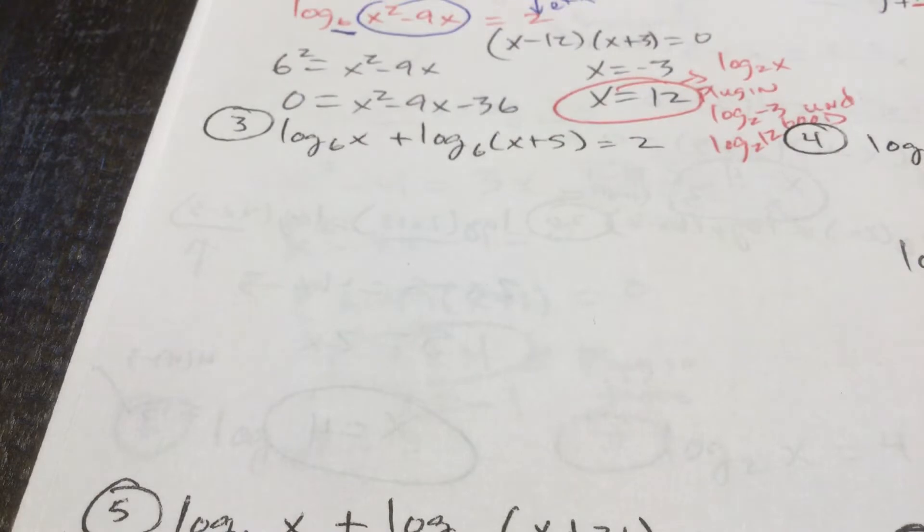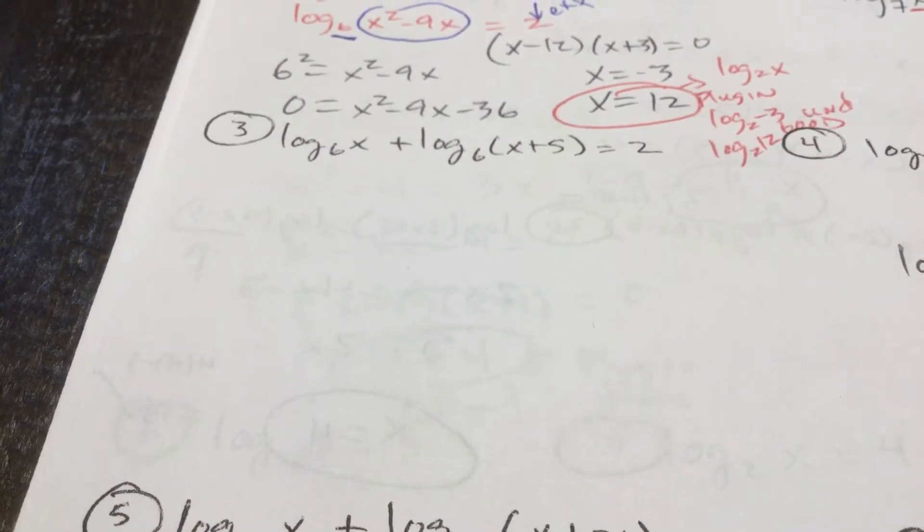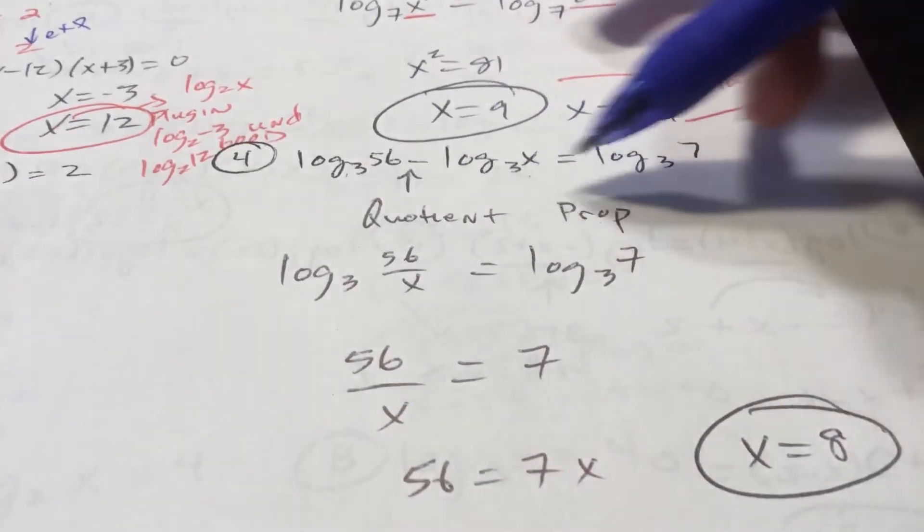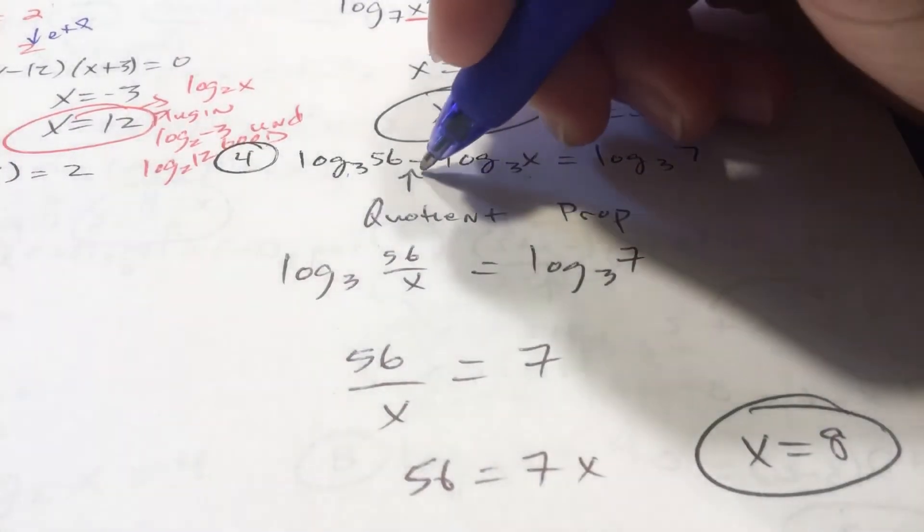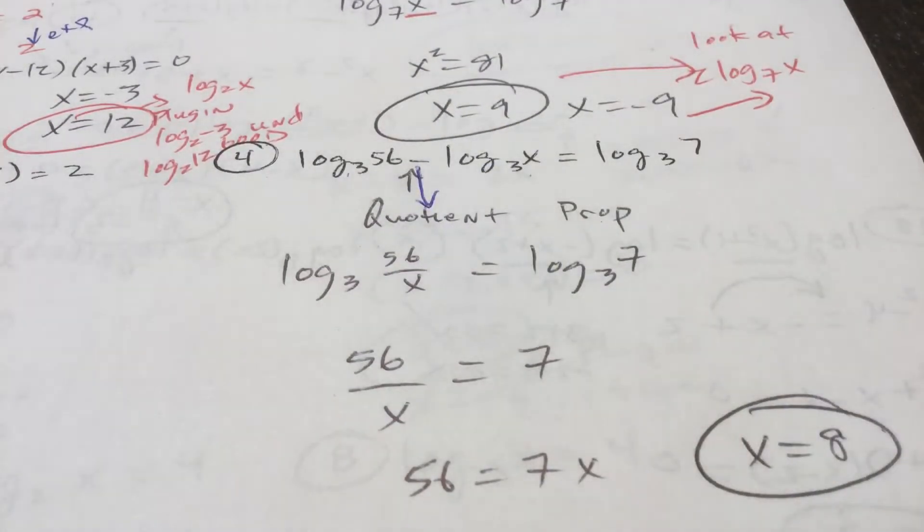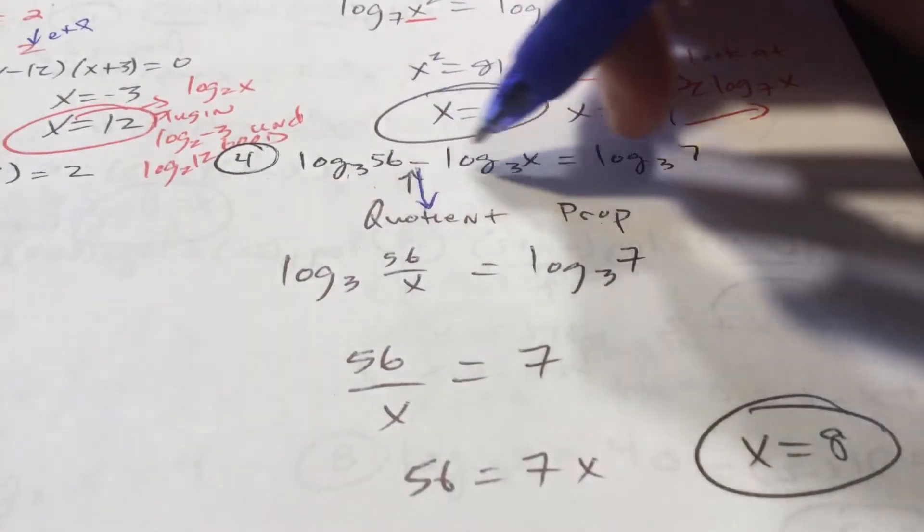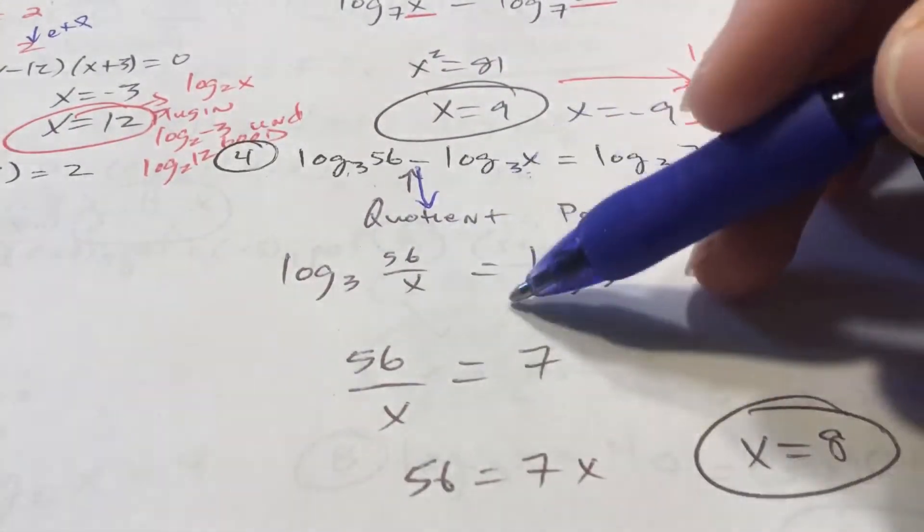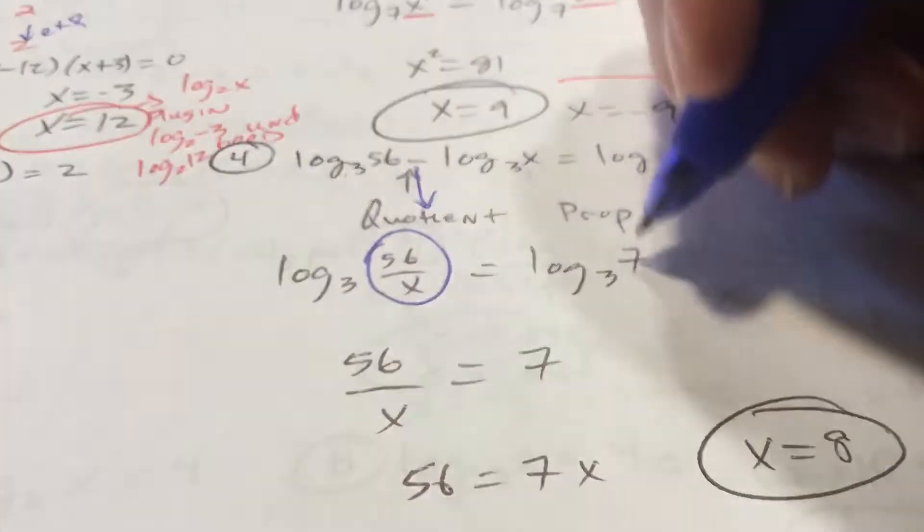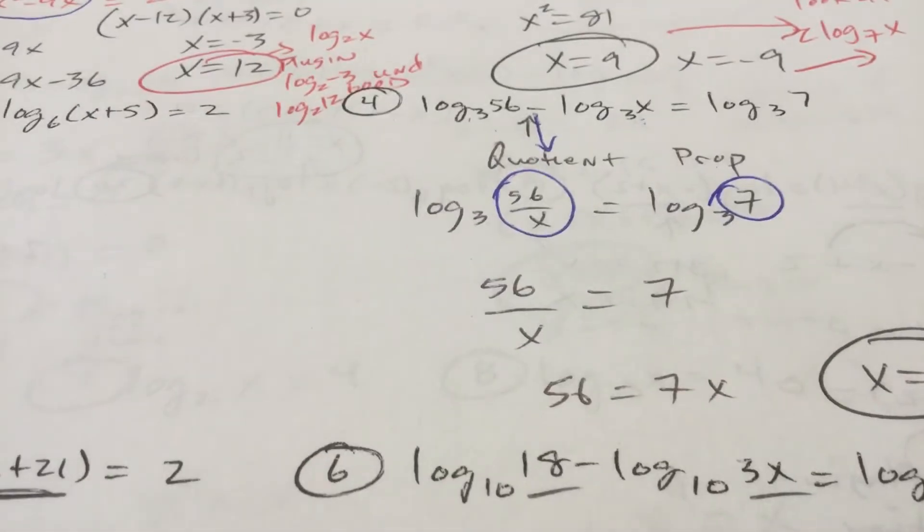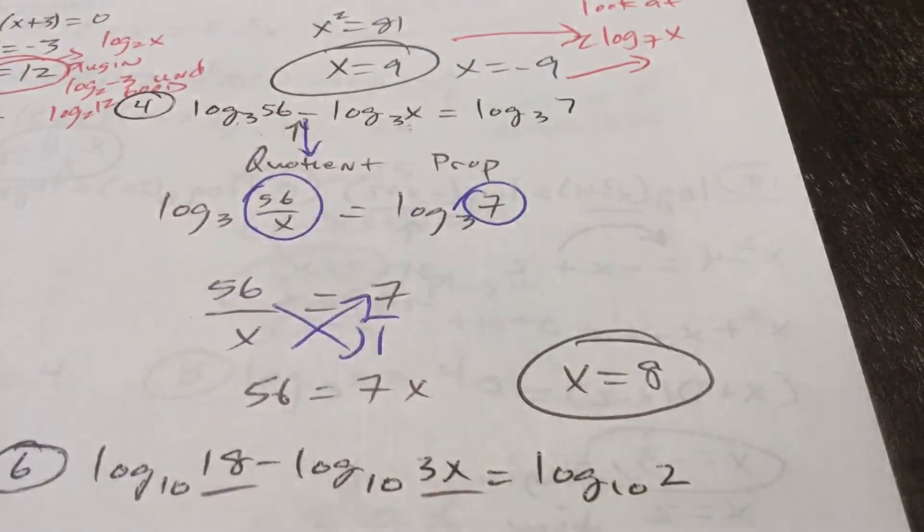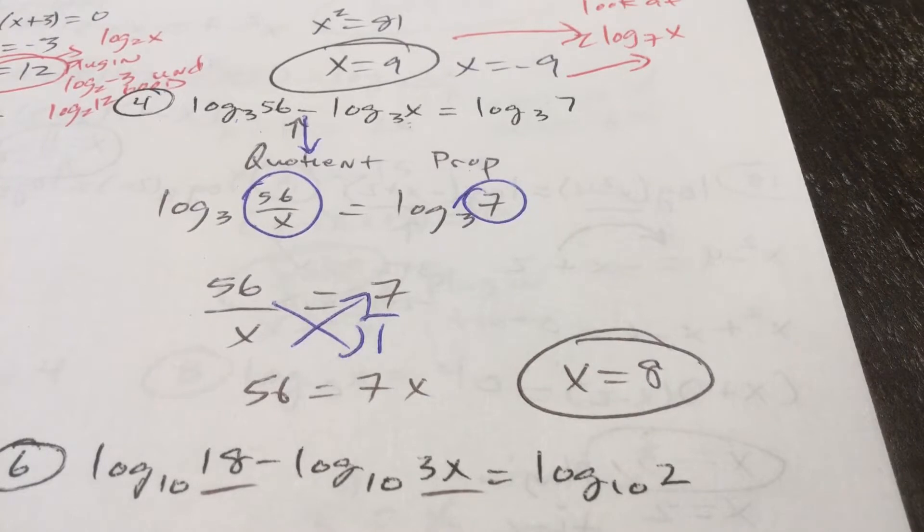All right. Number 3 is almost identical to number 1. You guys can do that. Literally almost identical. I will do 4 with you. Log base 3. This is the quotient property in the log world. Subtraction means division. You're going to have log base 3 of 56 divided by x equals log base 3 of 7. Log base 3 of blank equals log base 3 of blank. So this must be equal to this. 56 over 7 equals x. Cross multiply. 7x equals 56. x is 8. Log base 3 of 8 is a valid number. It is not undefined. So that is a winner.